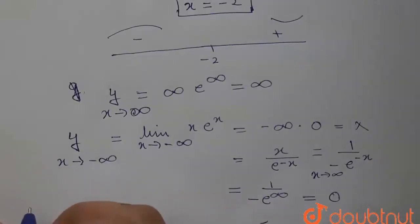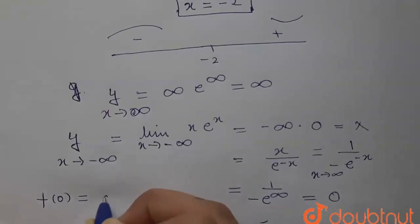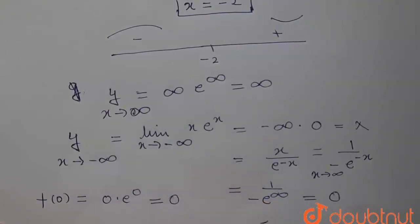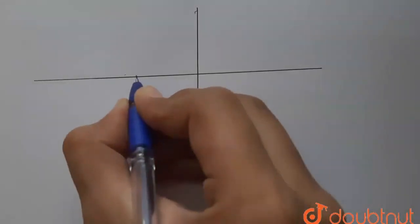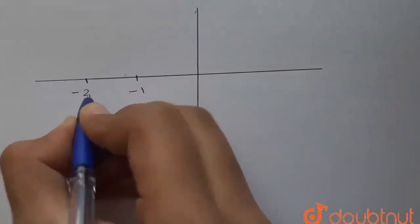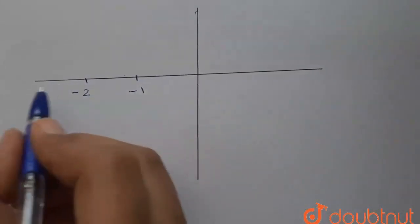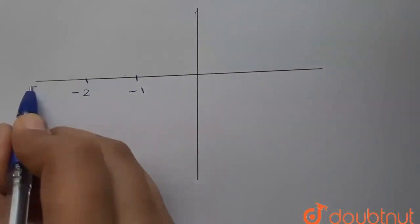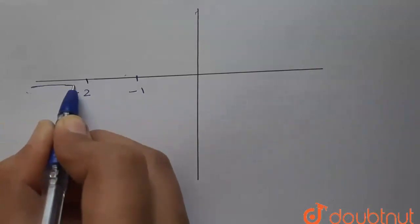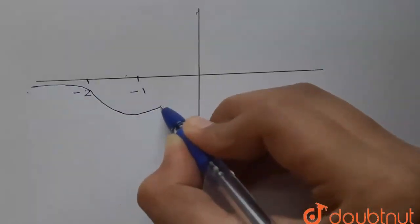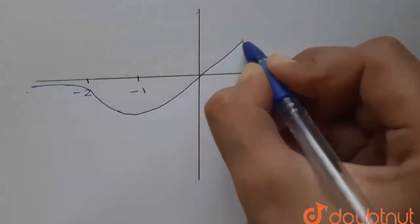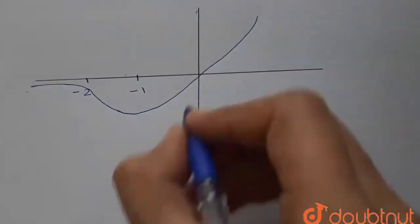For plotting the graph, we also find f(0): f(0) equals 0 times e to the power 0, which equals 0. So we have the key points. Now let us plot the graph: here we have minus 1 and minus 2. The graph is decreasing, then from minus 1 it turns and increases after that. This is our required graph.